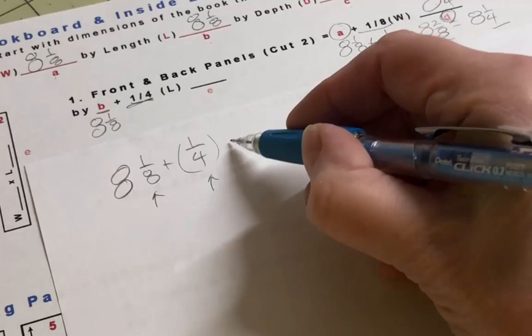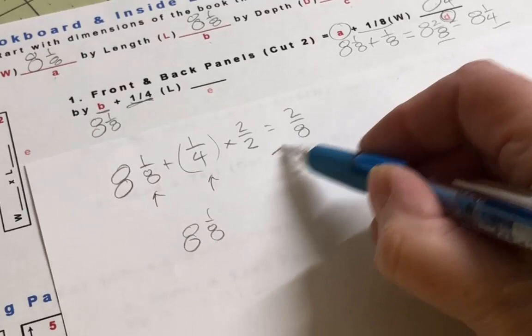Once you have the same denominator, you can just add the numerators, the top part of the fraction, to get your answer. Now that you have the answer, just fill in that value any place you see the appropriate letter.